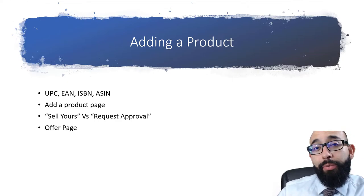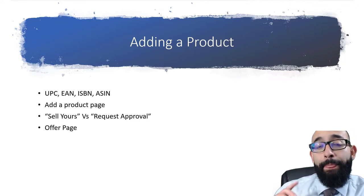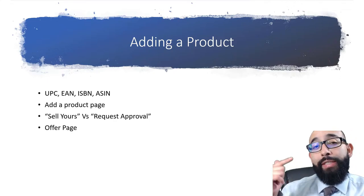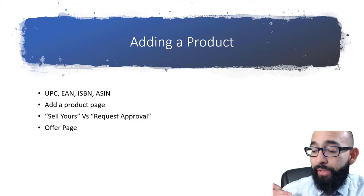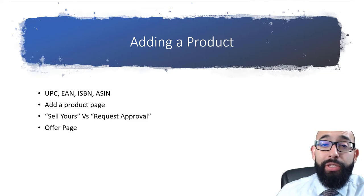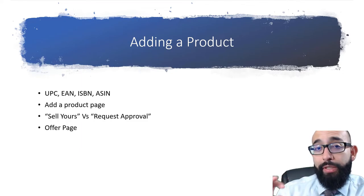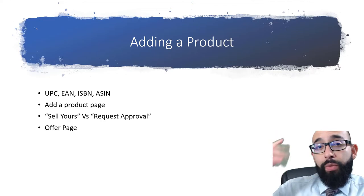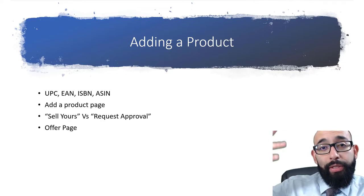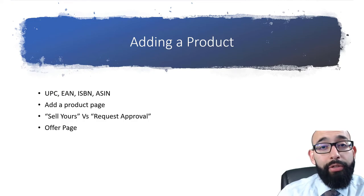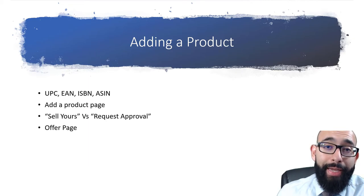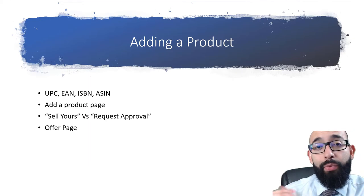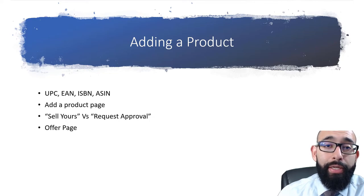Once you have that identifier number, go into your Seller Central dashboard, click on Catalog, click on Add a Product, and then put your identifier number in the search bar. You're going to get three different options: it's either going to say Sell Yours, Request Approval, or Show Variation. If the product has different variations like color or size, that's what will appear. If you're gated, you'll see Request Approval — we'll discuss that later.